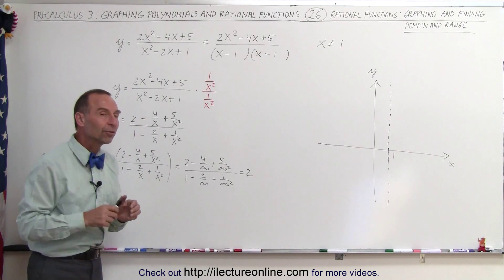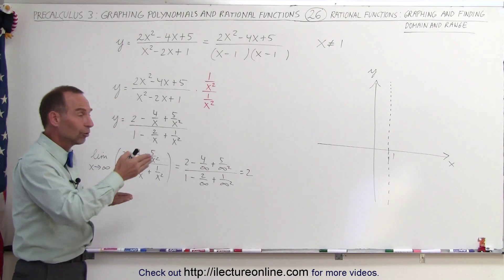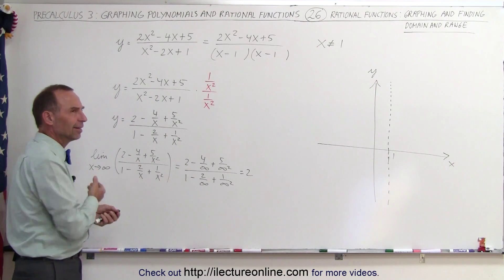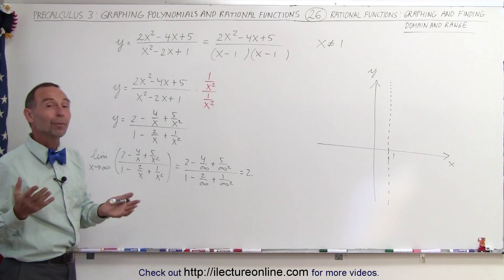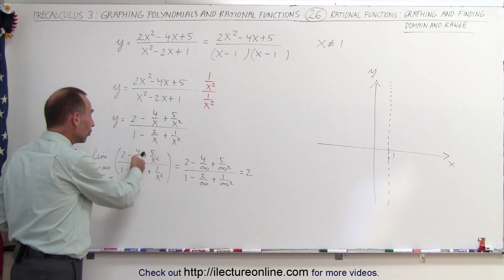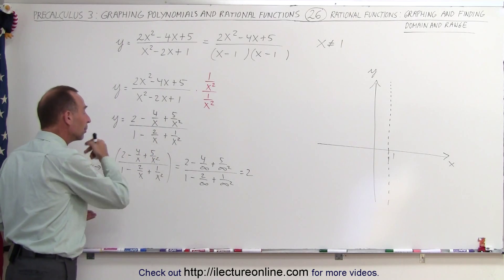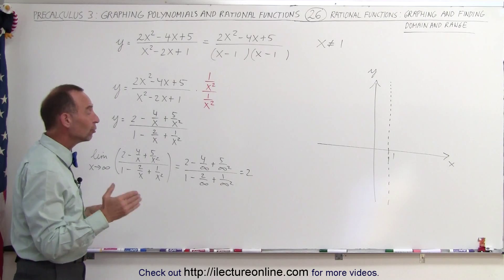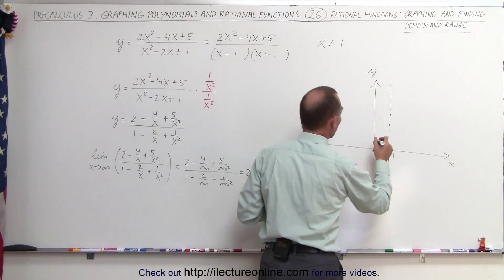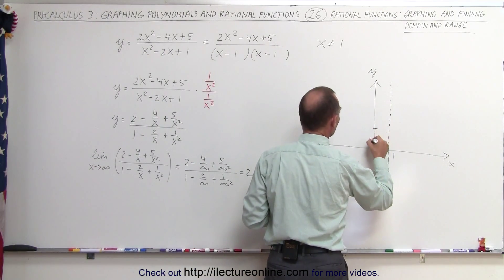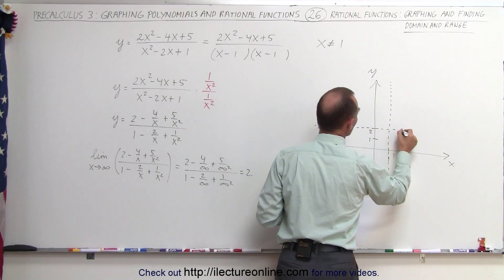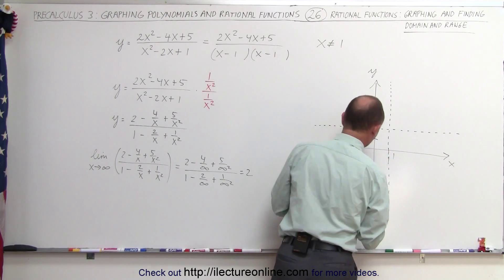Those fractions all go to 0 as x approaches positive or negative infinity, and we end up with 2 divided by 1, which equals 2. So y equals 2 is a horizontal asymptote. We mark that on the graph at y equals 2, and this will guide us in determining how to sketch the function.